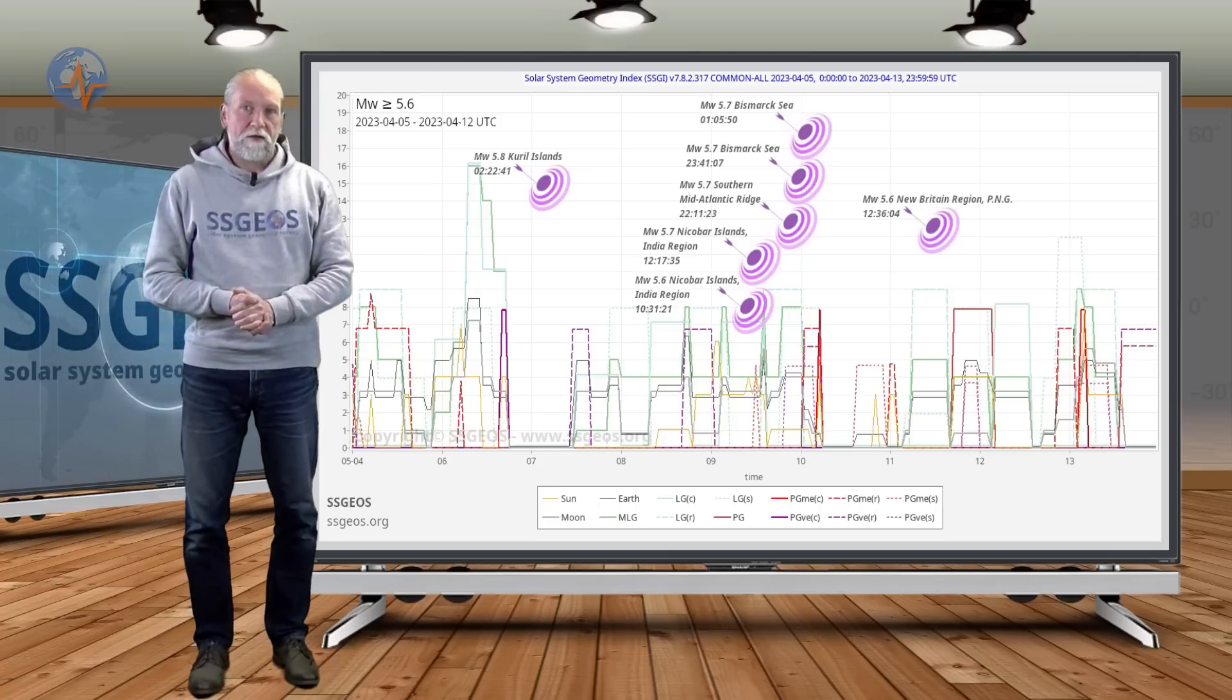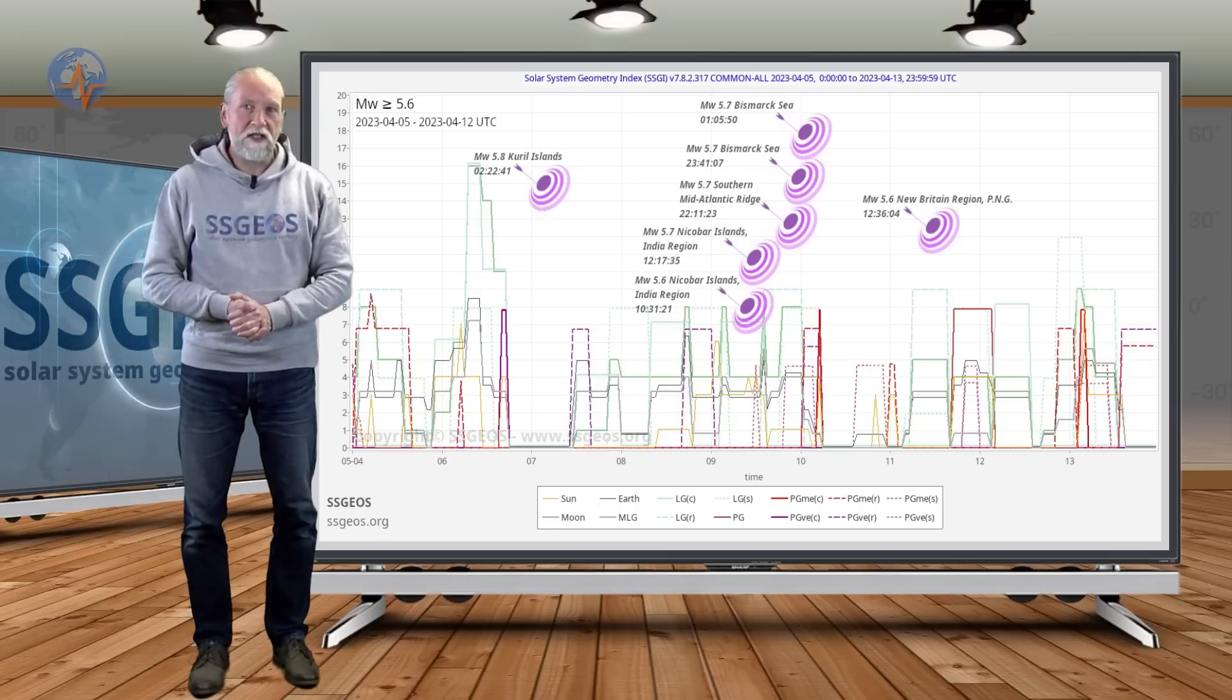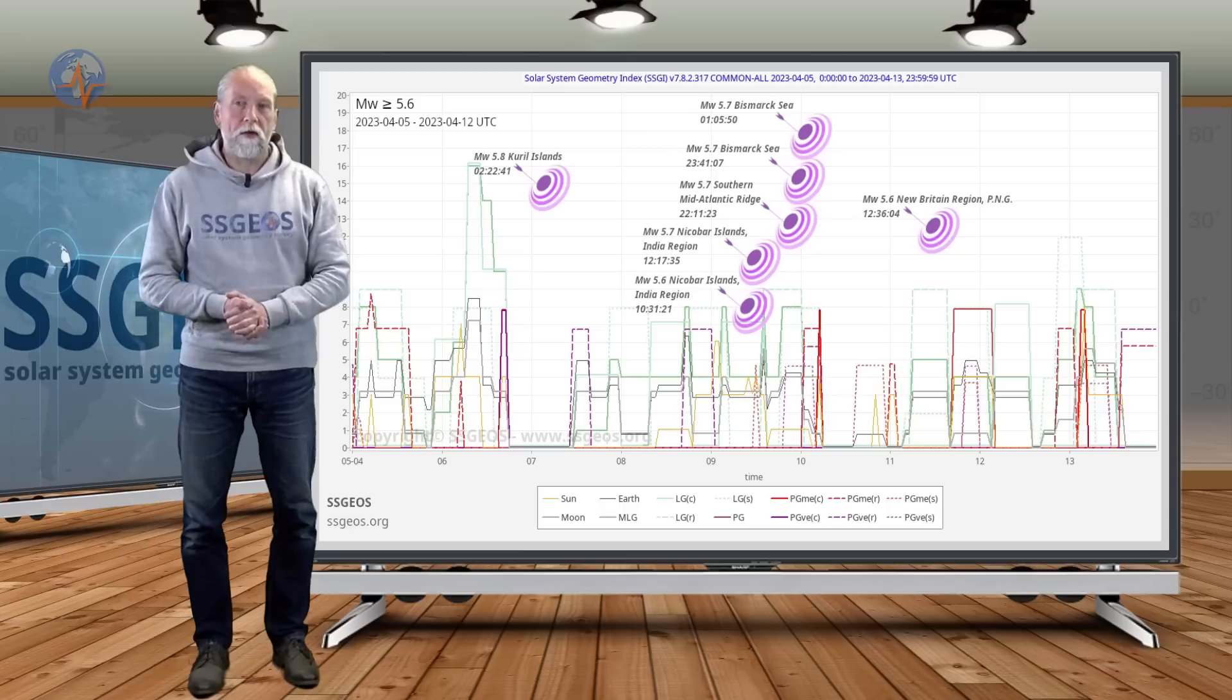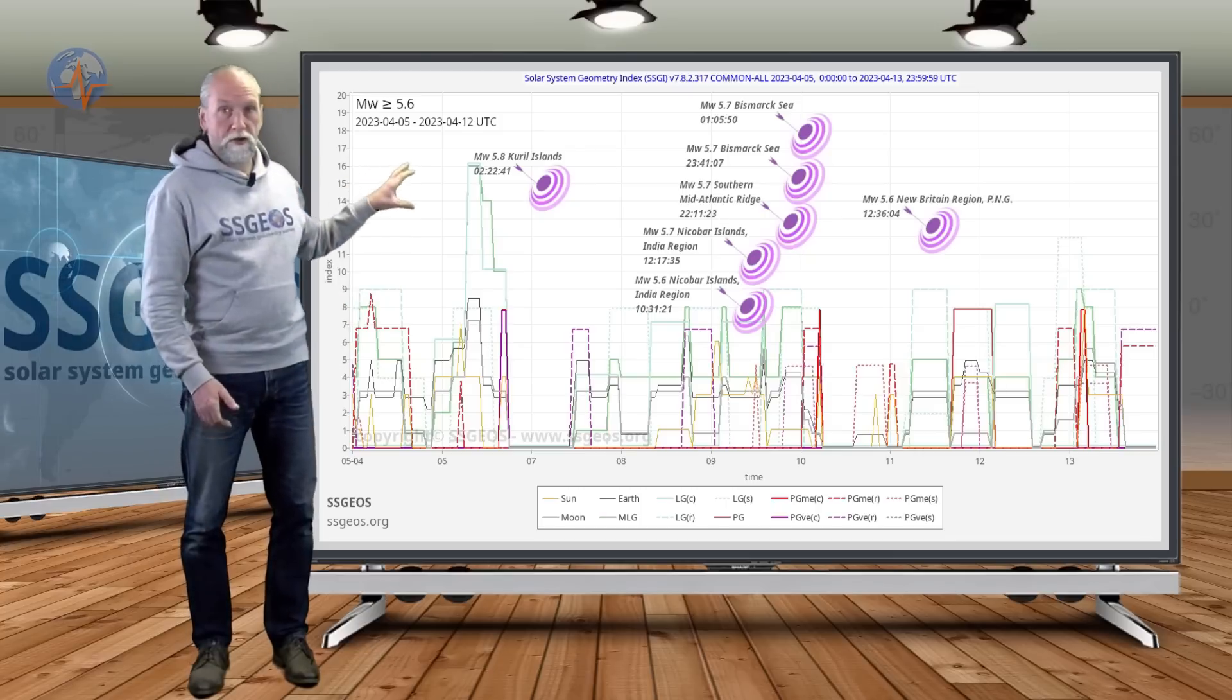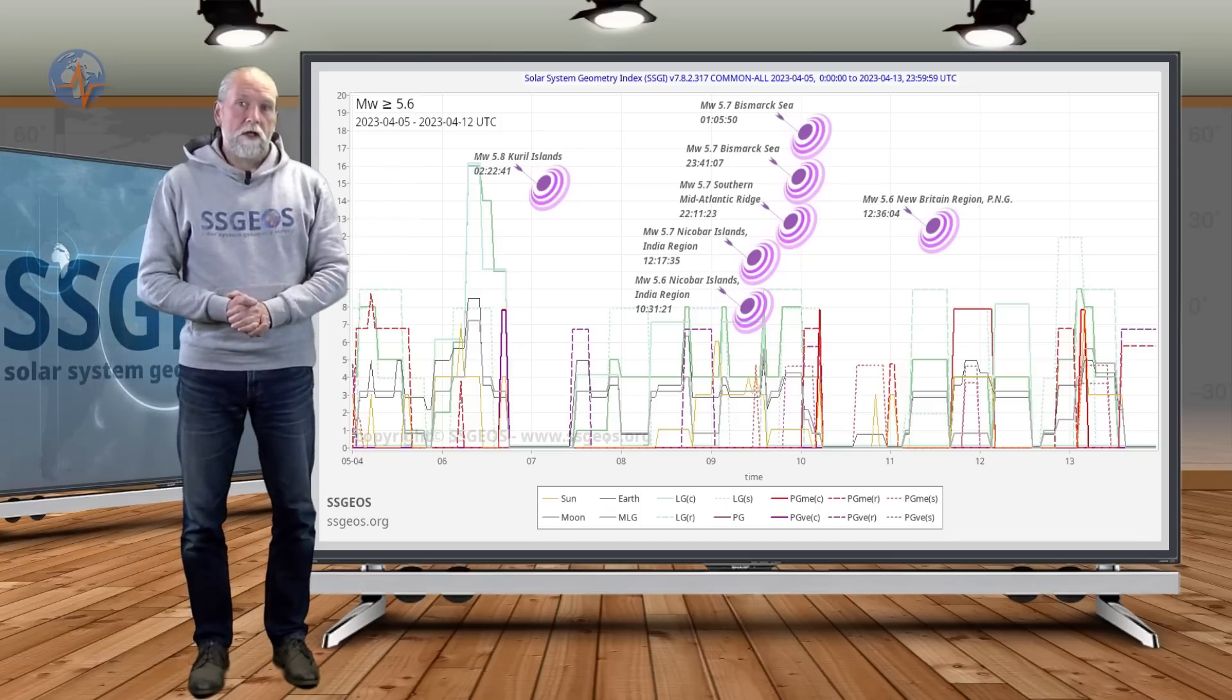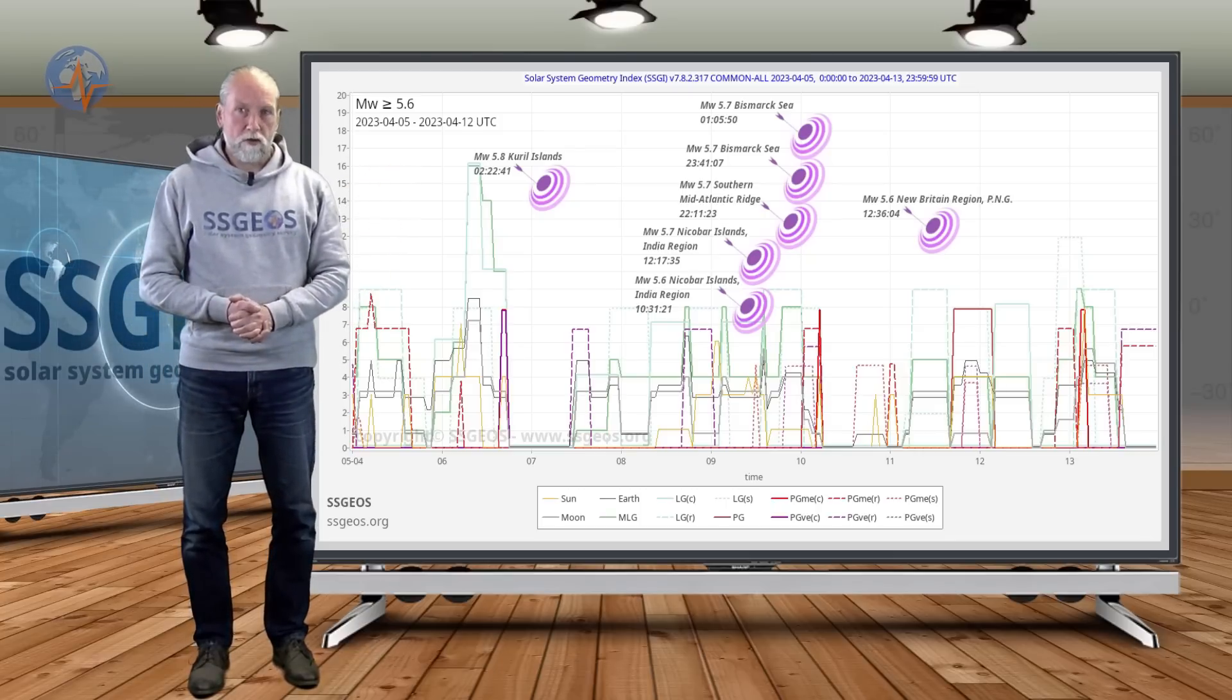Usually we see this clustering of stronger earthquakes. Strong earthquakes rarely occur on average, usually they cluster, and this is just another example of this clustering coinciding with some critical planetary geometry.